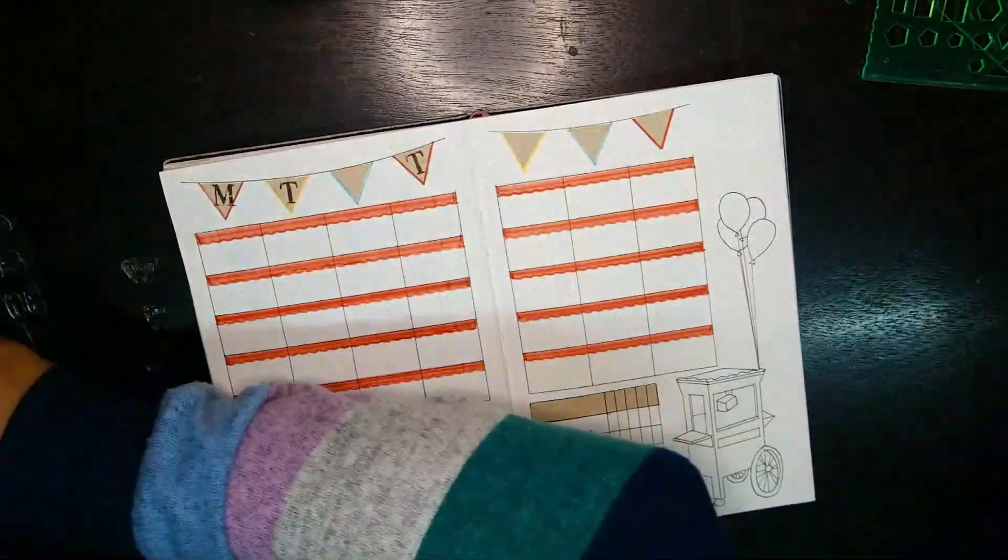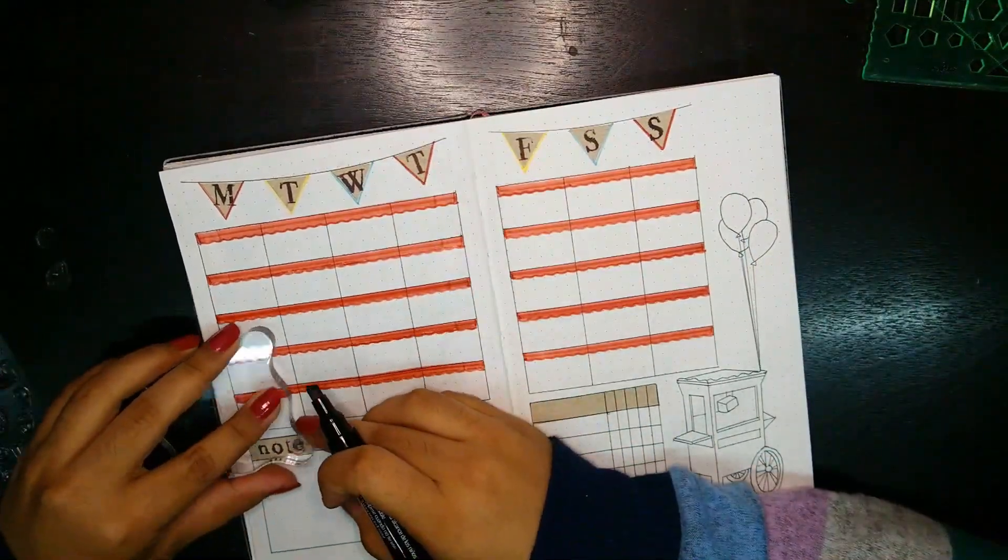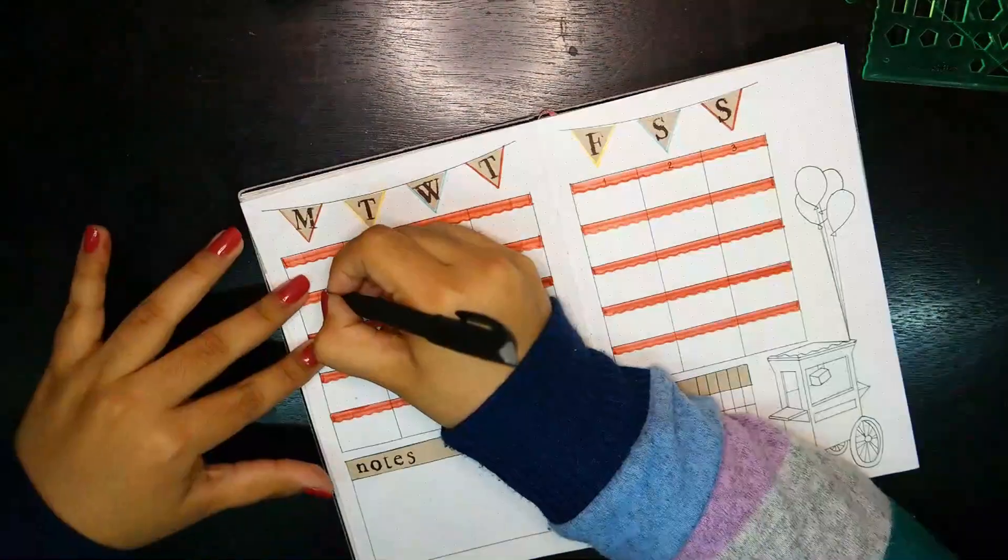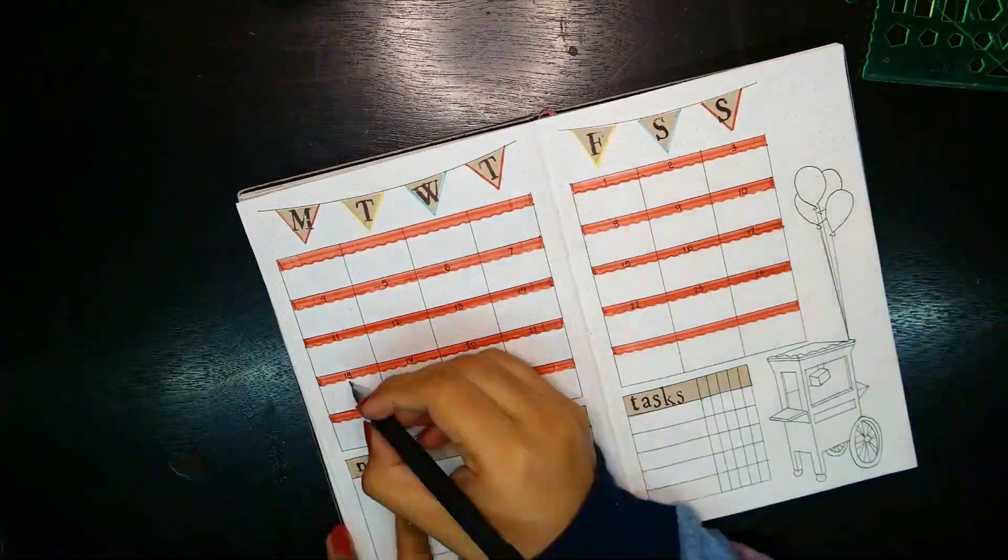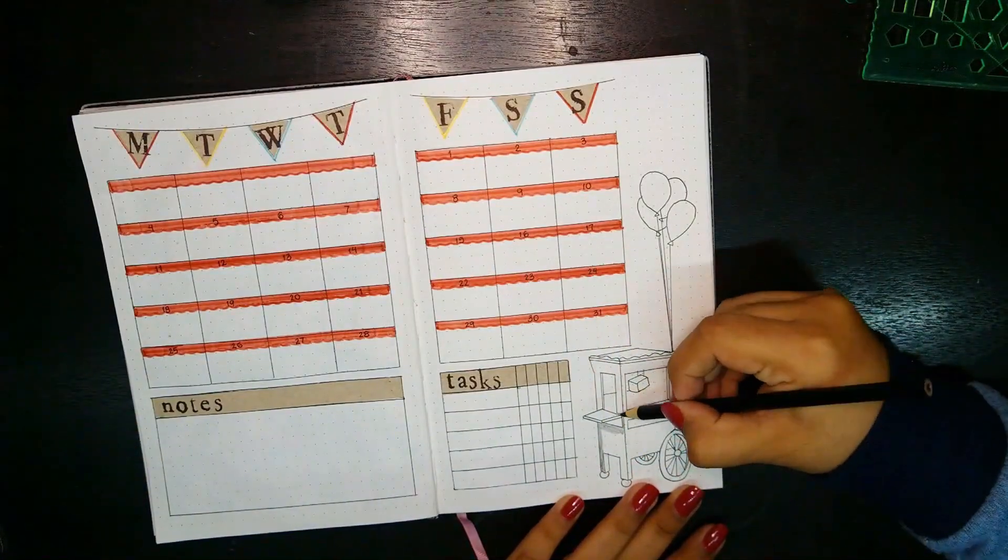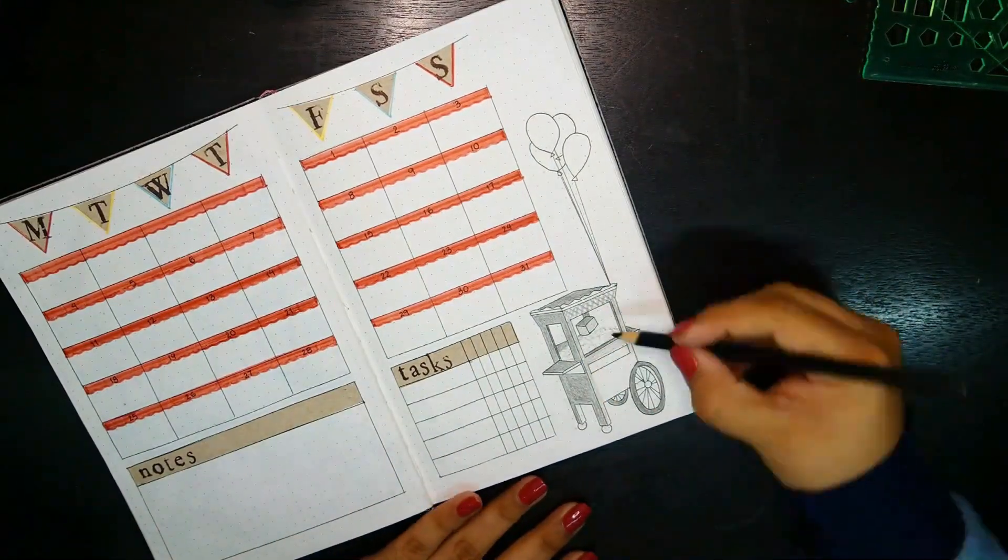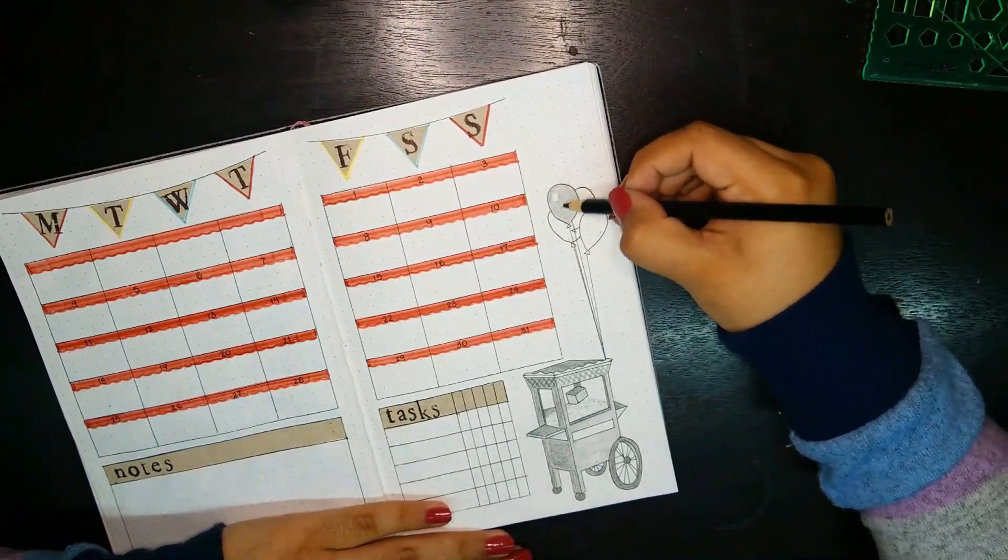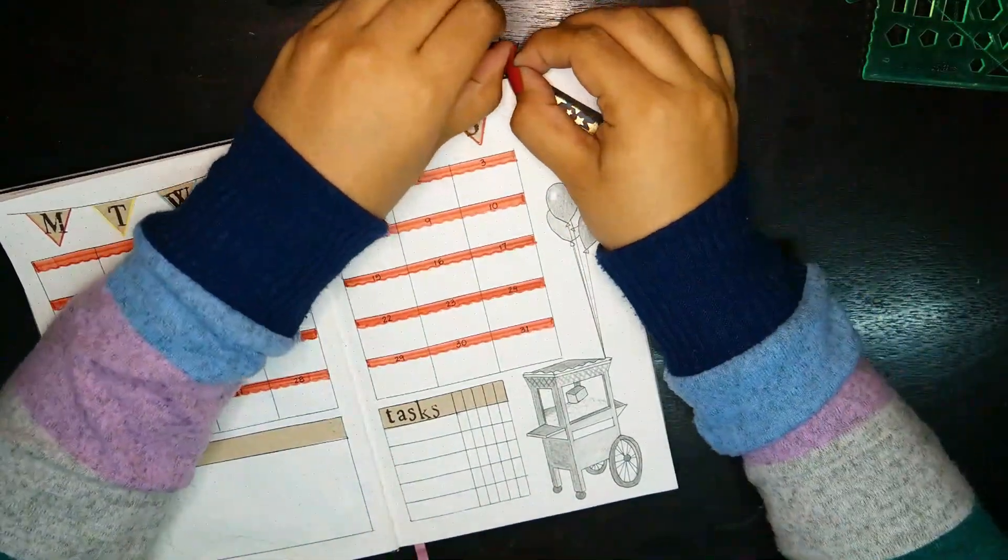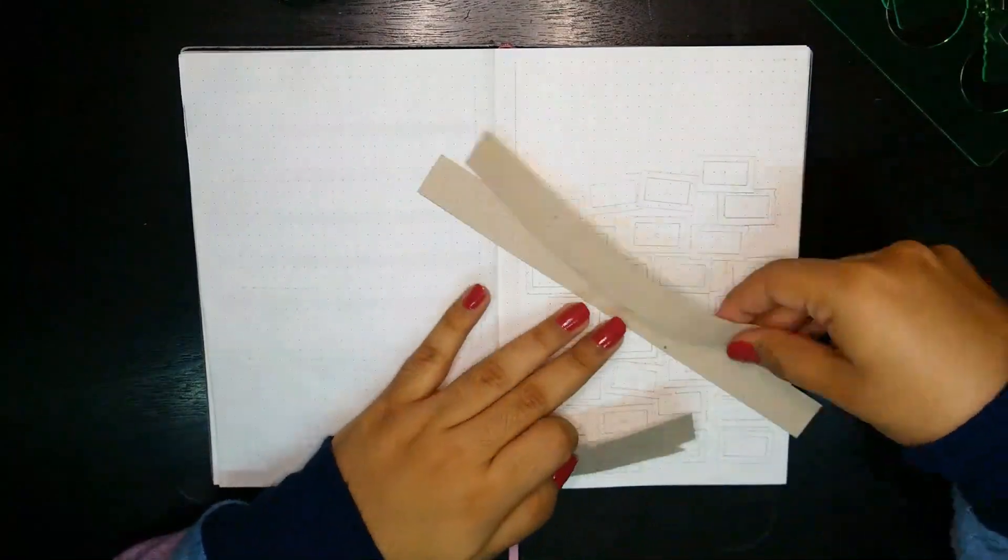The next thing was to add the first letter of each day on the flags using the uppercase alphabet stamps. For the notes and tasks titles, I used the lowercase stamps. The stamps and craft paper really helped me get the vibe I was going for, but I especially ended up loving the look of the black colored pencil on the drawings that I made for my spreads. After adding the days of the month, I went ahead and colored the popcorn stand, varying the pressure by going heavier on the areas facing away from the front and lighter on those facing the front. Lastly, we have the balloons and the final detail is a piece of washi tape placed on the top right corner.